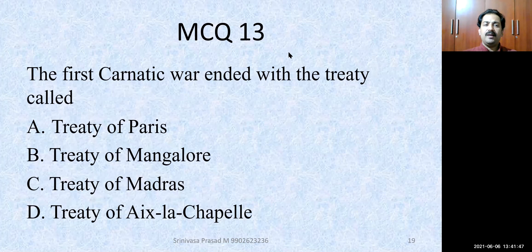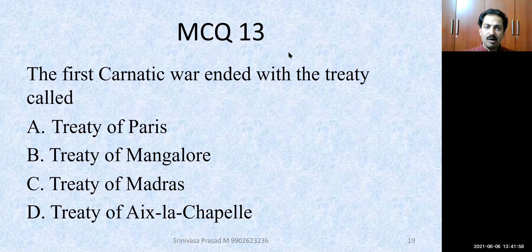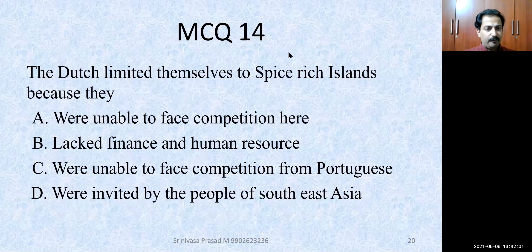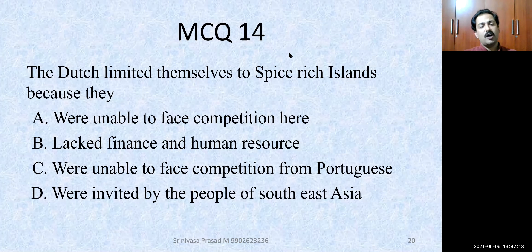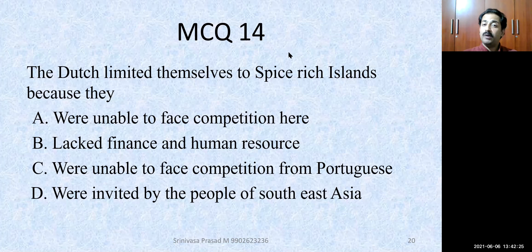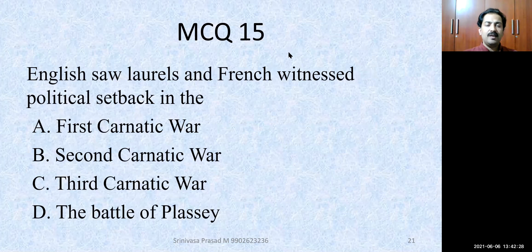MCQ 13: The first Carnatic War ended with a treaty called — the Treaty of Aix-la-Chapelle. Congratulations to all of you. MCQ 14: The Dutch limited themselves to spice-rich islands because — they lacked finance and human resource; they were unable to face competition from Portuguese; or they were invited by people of Southeast Asia. The correct answer is: they were unable to face competition, particularly from the English and French.